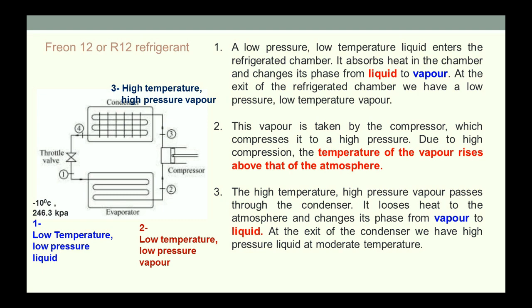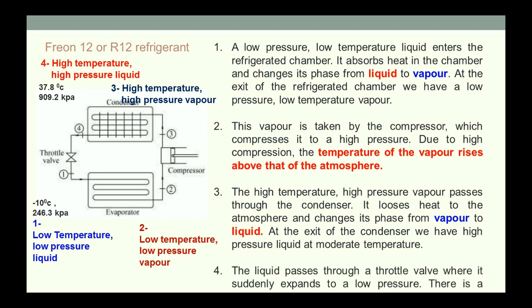When high temperature, high pressure vapor passes through the condenser, it converts back into liquid, but it will be at high temperature and high pressure, normally 37.8 degrees centigrade, approximately room temperature, and pressure of 909.2 kilopascal. This condition is not suitable to send to the evaporator to absorb heat from the surroundings. So we pass it through the throttle valve where the temperature and pressure of the refrigerant is lowered.